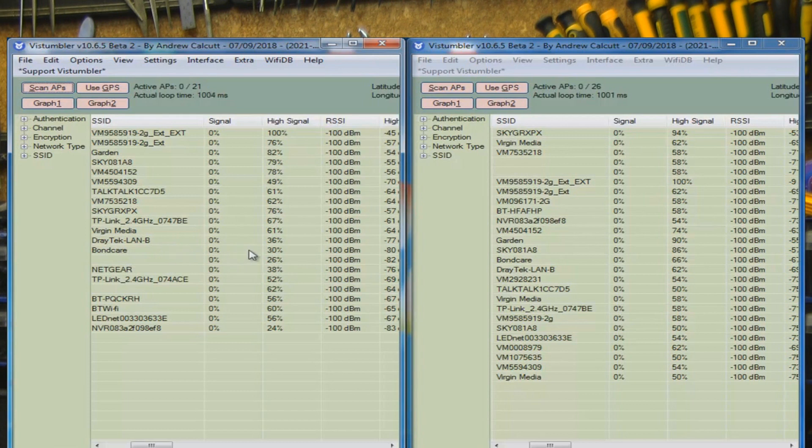But we've got Bond Care here, this is one that I like to use as a range test - it's quite far away. 30 percent on the ungrounded one, and here it is at 66 percent on the grounded one. So that's a big difference, and that is quite a way away from here in the lab, going through a lot of brick walls as well I must say. But yeah, you can look through these and you can compare the same ones.